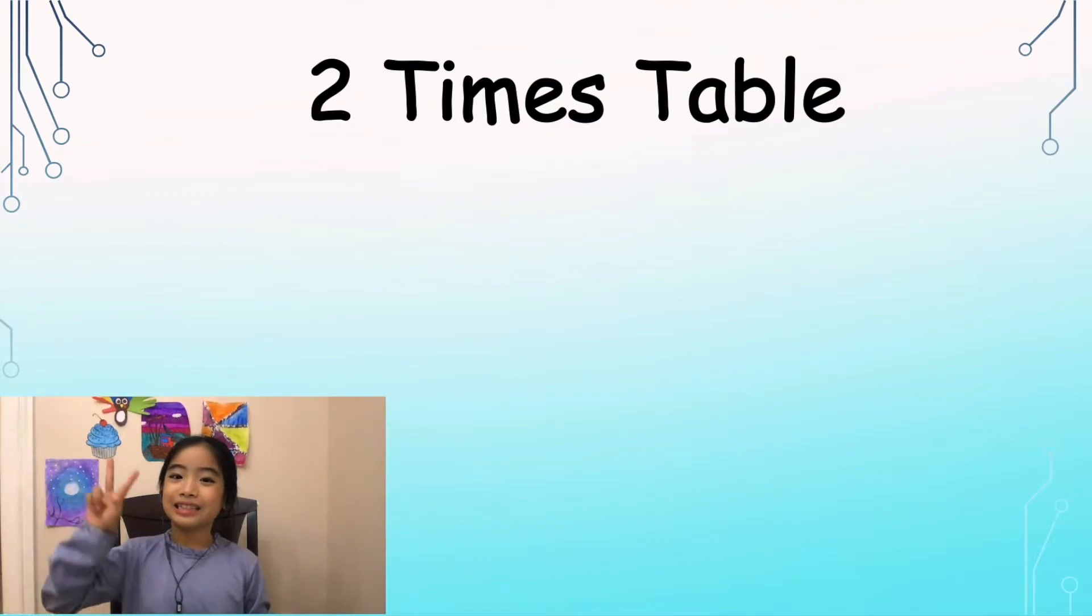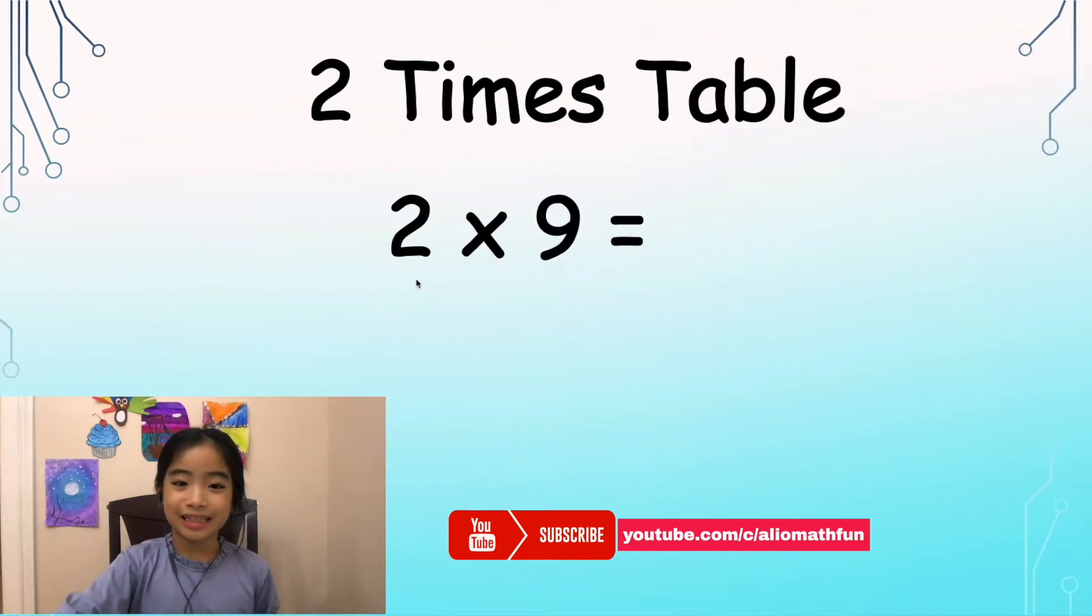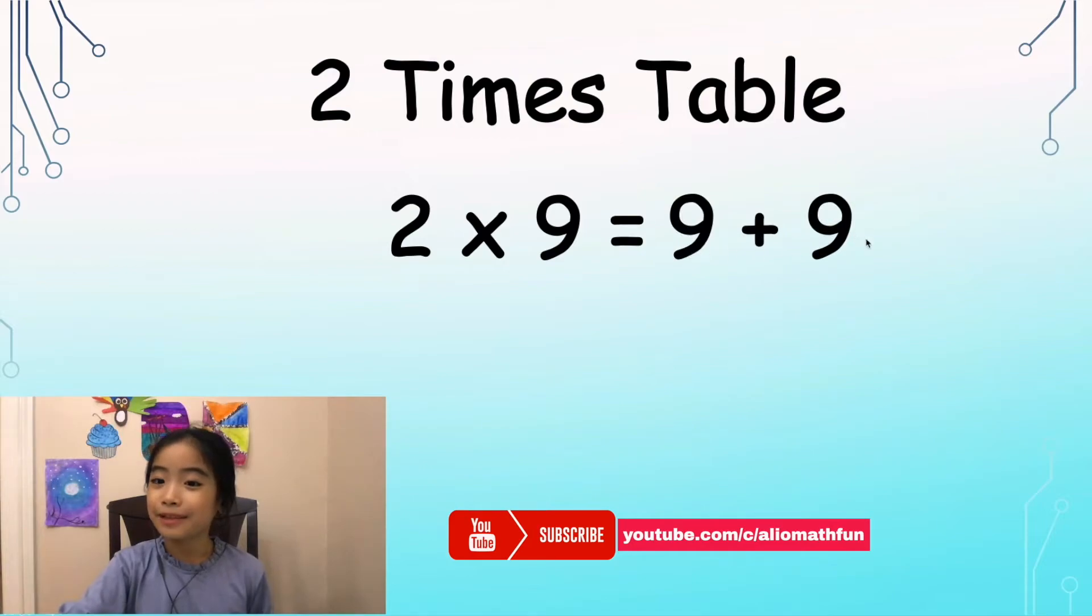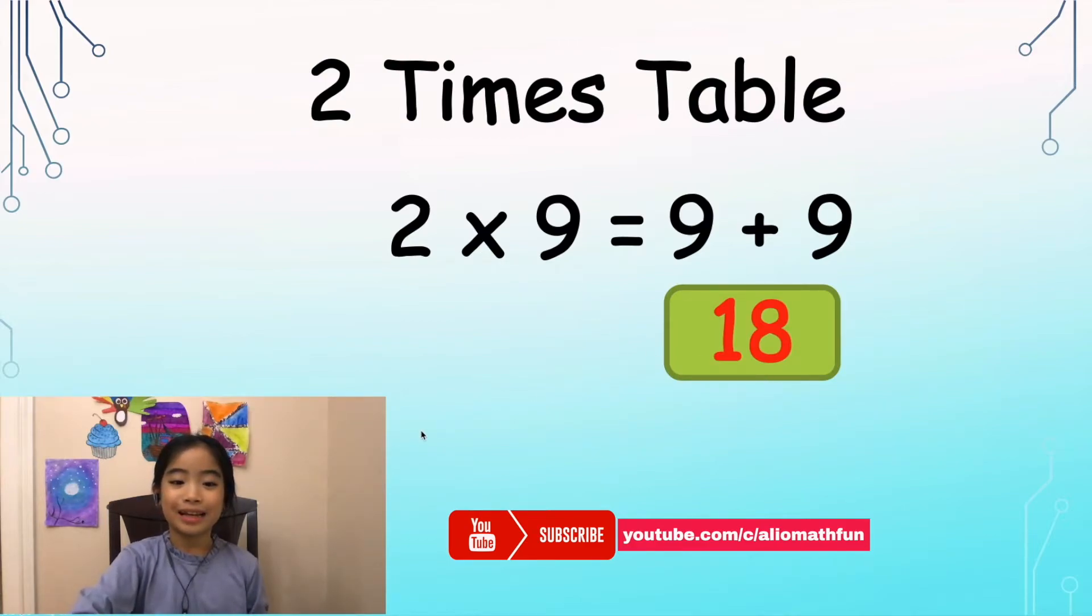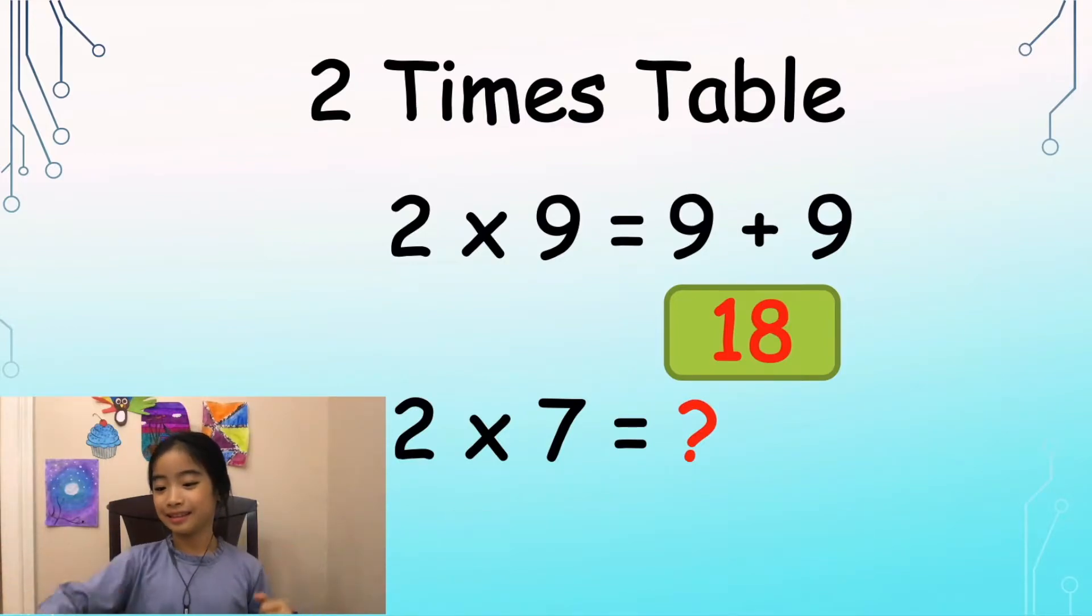First, let's look at the 2 times table. So the rule is, add the number by itself. Or in other words, double it. Let's look at my example. It's 2 times 9. So let's double 9. So 9 plus 9 equals 18. So 2 times 9 equals 18. Now, what is 2 times 7? Well, I'll leave that for you to figure it out.